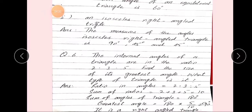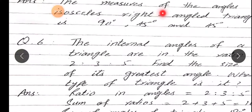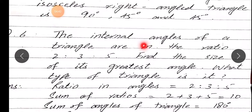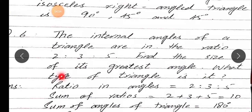Aapne isme triangles draw nahi karni, just yahi answers hain, hamne explain karna hai, hamne results dene hain, ki yeh kyun hai. Next hai beta question number 6: The internal angles of a triangle are in the ratio 2:3:5. Find the size of its greatest angle. What type of triangle is it?